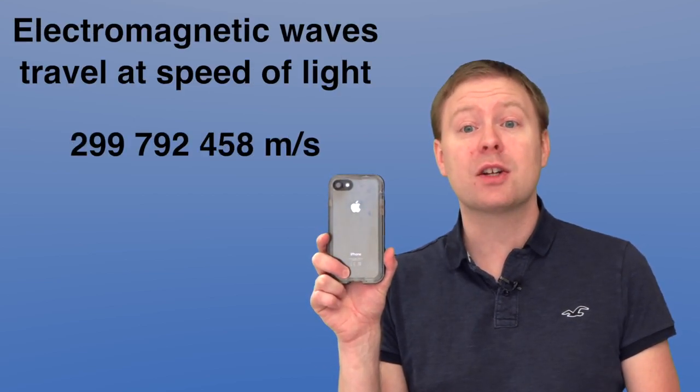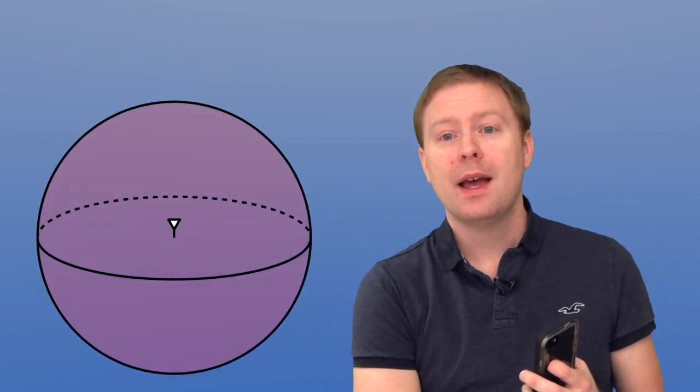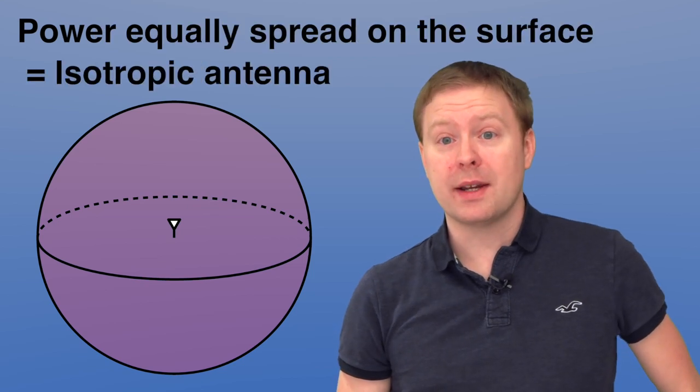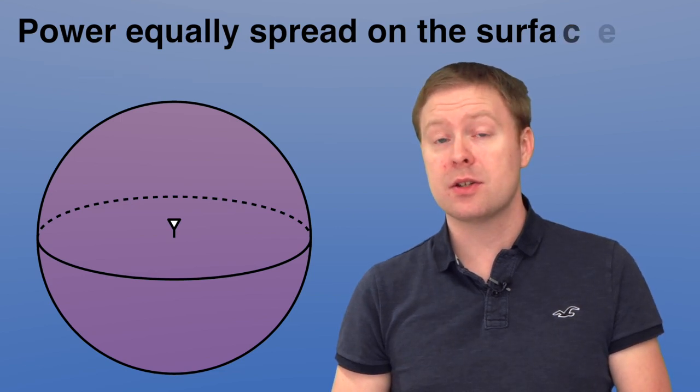When you transmit power from your device it starts to spread out into the air at the speed of light because this is electromagnetic waves, and the power is then spreading out as if you were blowing up a balloon where the power lies on the surface of this balloon. The larger the balloon is, the thinner the surface area is going to be. That also means that the power on this sphere becomes more and more spread out because it has a larger and larger area. If you have a so-called isotropic antenna, which we will consider in this video, then the power is equally spread on this surface.